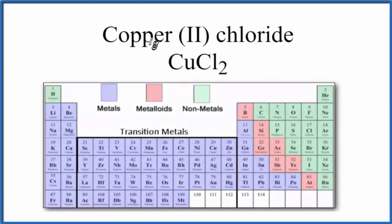In this video we'll take a look at whether copper chloride is ionic or covalent — that's CuCl2. The short answer is that CuCl2 is an ionic compound.